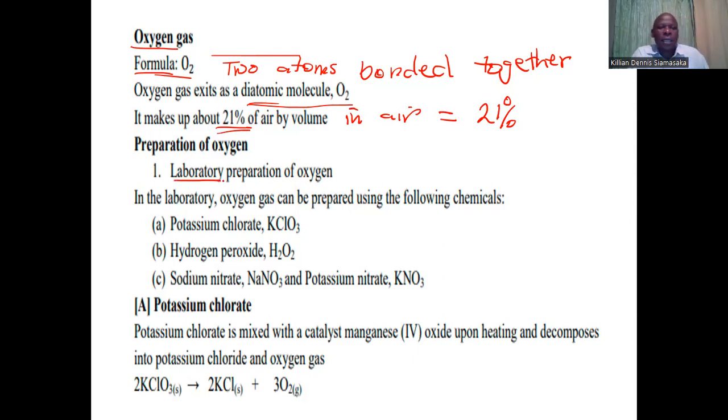Oxygen can be prepared in the laboratory using three methods and chemicals: potassium chlorate, hydrogen peroxide, and sodium nitrate and potassium nitrate. Let's look at just one. We have potassium chlorate.